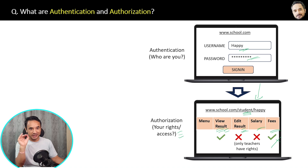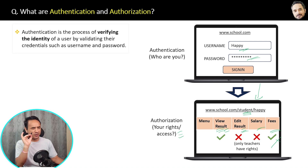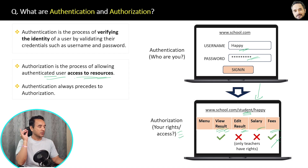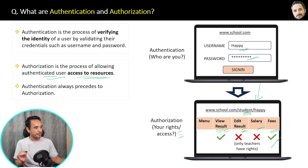Here are the formal definitions: Authentication is the process of verifying the identity of a user by validating their credentials, such as username and password. Authorization is the process of allowing an authenticated user access to resources. Authentication always precedes authorization.